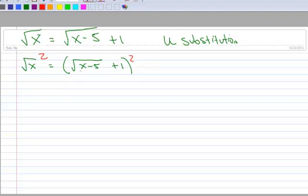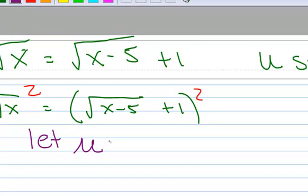So in order to avoid squaring something with a radical in it, what you're going to do is you're going to say let U equal the radical X minus 5. And I picked that because of these two terms in the binomial,